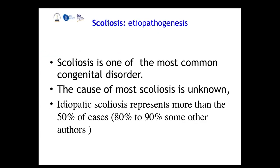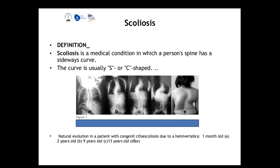Our second topic is scoliosis. Idiopathic scoliosis represents more than 50 to 60 percent of cases and is one of the most common congenital disorders. Most of the time the cause is unknown, which is why it is called idiopathic scoliosis. It is a medical condition in which the spine makes a sideways curve that can be S-shaped or C-shaped.